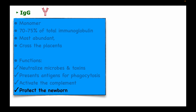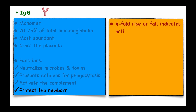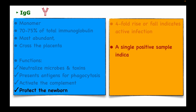These anti-Rh antibodies may attack fetal red blood cells which carry the antigen, causing potential hemolytic anemia with the risk of hydrops fetalis in the fetus. A fourfold rise in immunoglobulin G levels indicates an active infection, while a single positive sample from a patient may indicate a past infection.